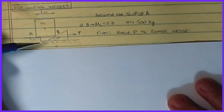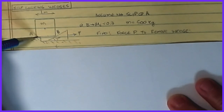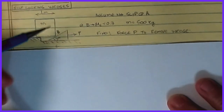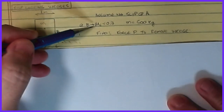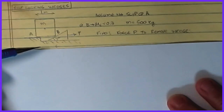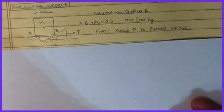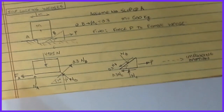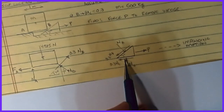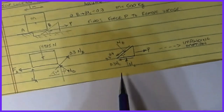For this example, we assume no slippage at point A — the block stays stationary. The coefficient of static friction at interface B is 0.3, the mass of the block is 500 kilograms, and we want to find force P needed to pull the wedge out. We set up free body diagrams: the wedge has impending motion to the right, so friction forces at the bottom (F_c) and at interface B both oppose that motion. We set F_c equal to F_c_max = 0.3·N_c, and F_B = 0.3·N_B.